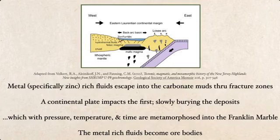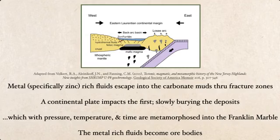Metal — specifically zinc — escapes into these carbonate muds through fracture zones in the interacting plates. Eventually, a continental plate comes along and slowly buries these deposits. With time, pressure, and temperature — the usual metamorphic conditions — this substance metamorphoses into the Franklin marble, and these metal-rich fluids become ore bodies, famously zinc.